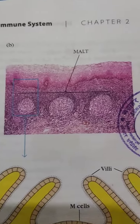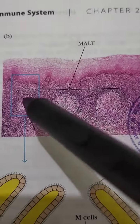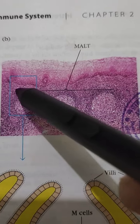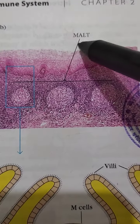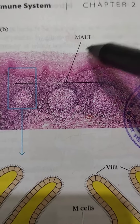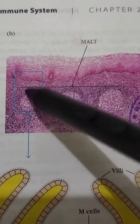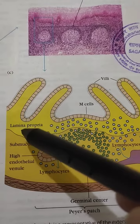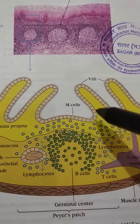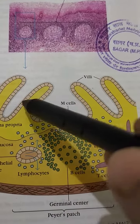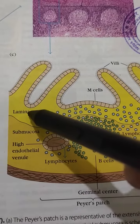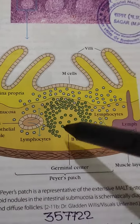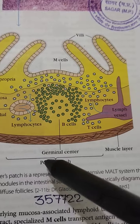This is the stained section of MALT tissue, and these are lymphoid follicles. If we see this MALT — mucosa-associated lymphoid tissue — cross-section in detail, we find that this is the lamina propria in the intestine. These are villi, M cells that recognize antigen, and in the lamina propria this is Peyer's patches.